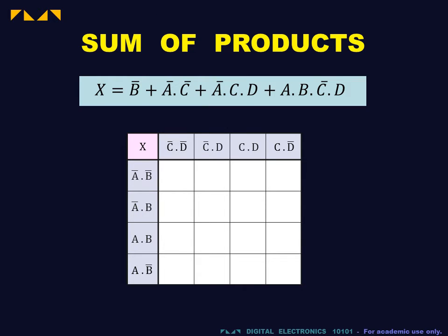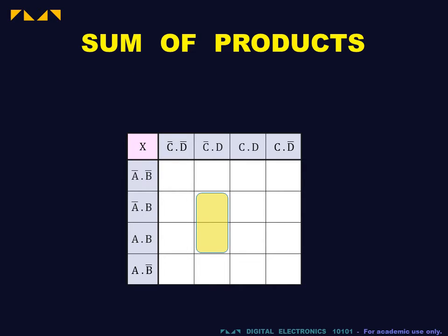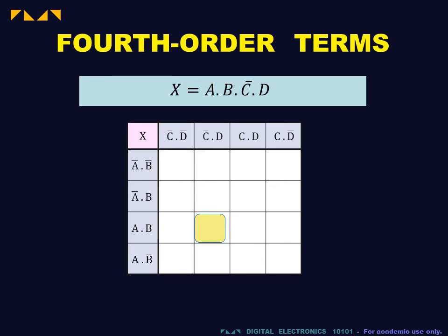Let's now see how a sum of products expression is represented on a Karnaugh map. As for the two input case, each product term is represented by a contiguous binary ANDed grouping or bag. Each fourth order term or minterm is represented by a single cell. For instance, the ABC bar D term is located at the intersection of the AB row and the C bar D column.